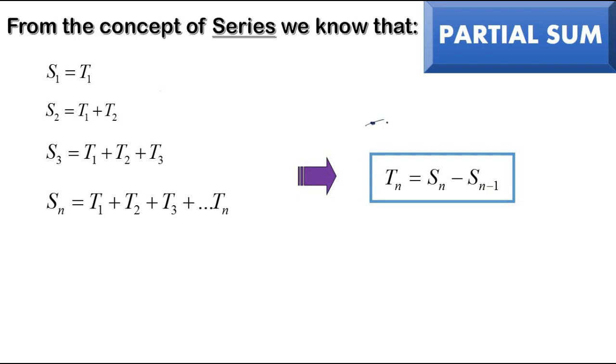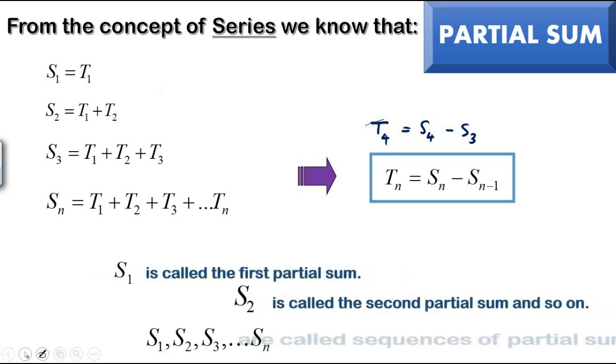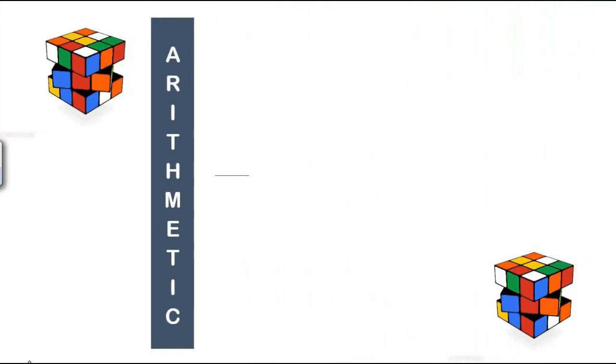Clear? S1 is called the first partial sum, S2 is called the second partial sum, and so on. S1 up until Sn will be called partial sums.